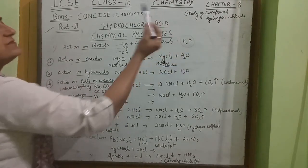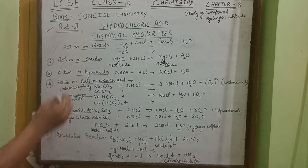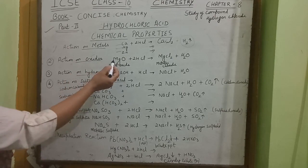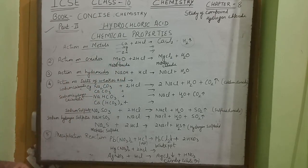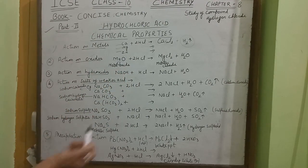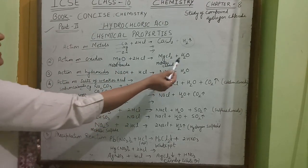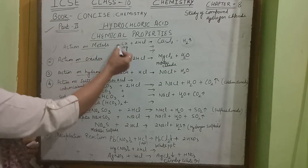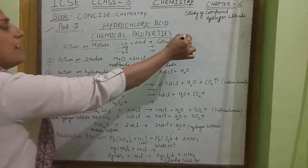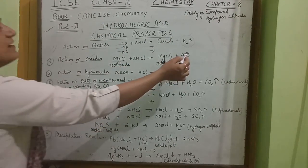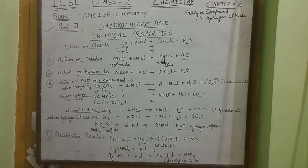The action of hydrochloric acid on metallic oxides: when hydrochloric acid is added to magnesium oxide, it forms magnesium chloride and water. So when a simple metal reacts with hydrochloric acid, hydrogen gas is evolved; but when a metallic oxide reacts with hydrochloric acid, water is formed instead. You can practice other equations using examples like calcium oxide.